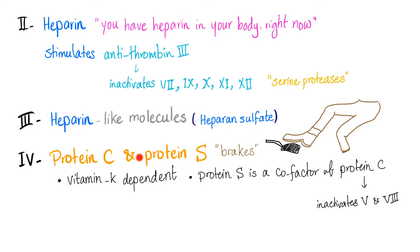Protein C and protein S — think of these as the brakes, not the accelerator, but the brakes on coagulation. They stop coagulation by inactivating the accelerators: factors 5 and 8. Protein C and S are vitamin K dependent. So when you have vitamin K deficiency, or when you are taking warfarin to inhibit vitamin K dependent factors, you don't have protein C and S — you don't have the brakes. Also, when you are taking warfarin, you are inhibiting the other vitamin K dependent coagulation factors such as prothrombin, 7, 9, and 10.